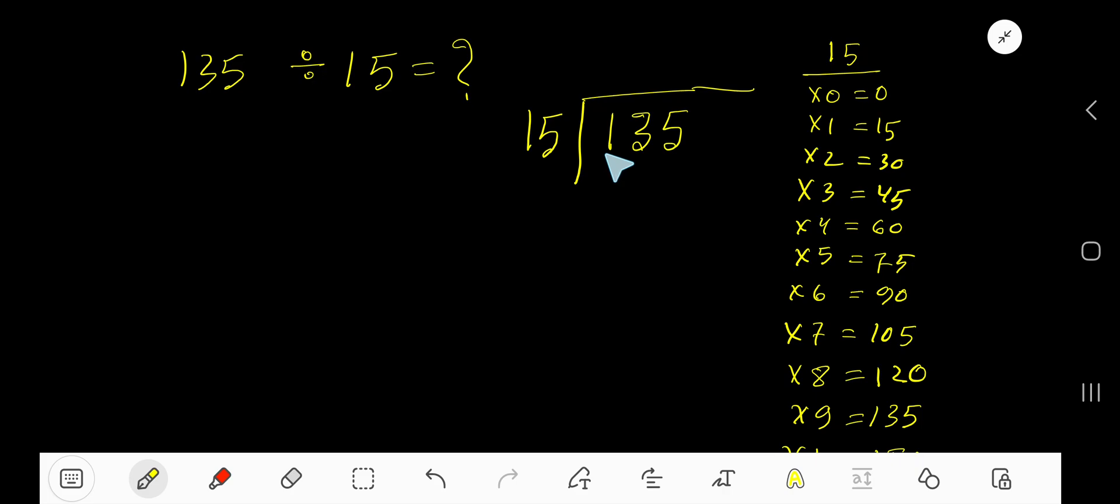Look, 15 goes into 1, 0 times actually as 1 is less than 15. So 0 times 15, that gives you 0. Subtract 1. Bring down this digit, 13.